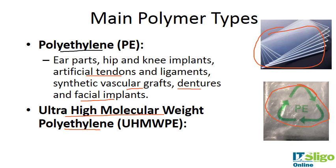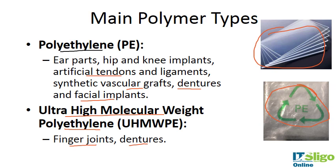Polyethylene is very inert, very stable, and is tolerated very well by the body, making it probably one of the most common polymers used in medical devices. Ultra high molecular weight polyethylene, because of its high molecular weight, is even more stable with great wear resistance. It's used in finger joints, dentures, acetabular cup linings in total hip replacement, and the lining in knee replacements as well.